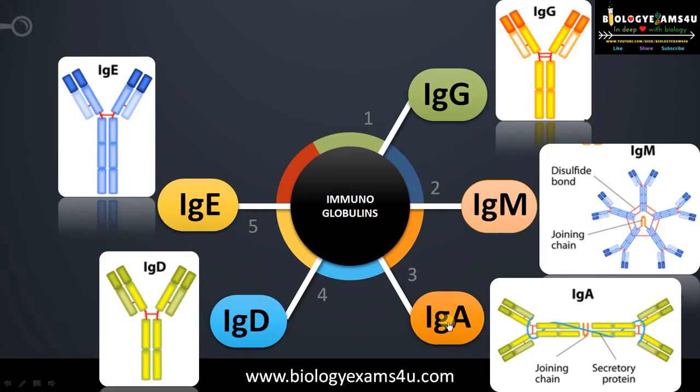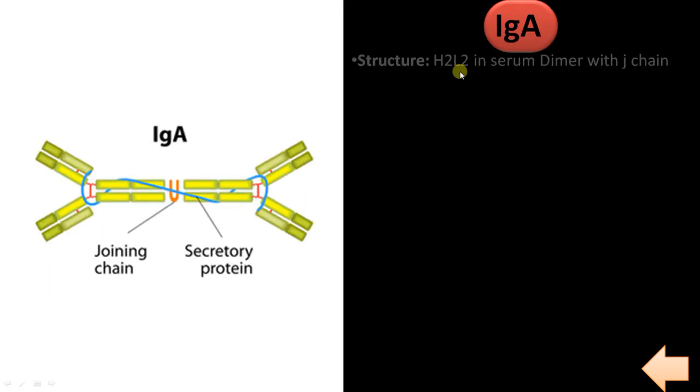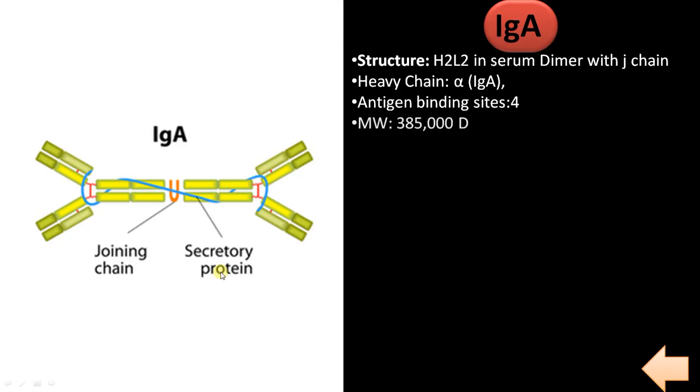The third one is IgA, called the secretory immunoglobulin. The structure is 2 H2L2, a dimer joined by a J chain. This secretory protein is synthesized by epithelial cells. Its heavy chain is alpha. It has four antigen binding sites—1, 2, 3, and 4. Molecular weight is approximately 385,000 dalton. It is the second most abundant antibody after IgG, at nearly 30%. It cannot cross placenta and cannot fix complement.